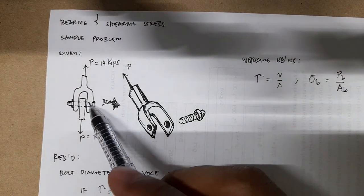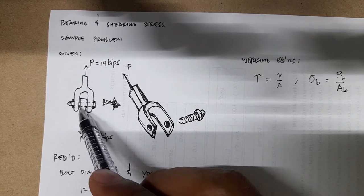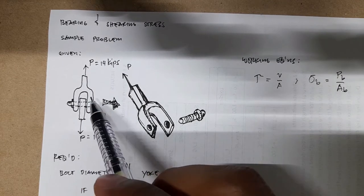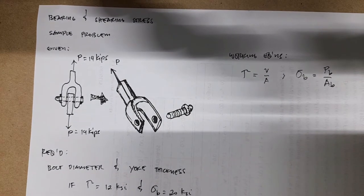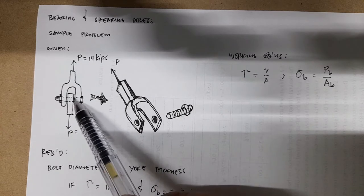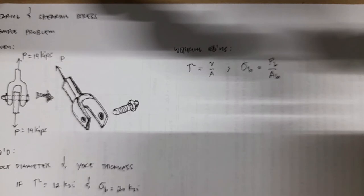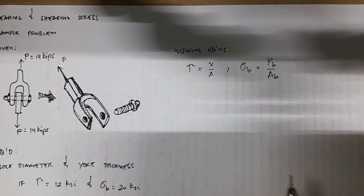If you observe this drawing, we actually have two sheared areas here under the action of a single force. This is what we call double shear — a single load applied but we have two sheared areas. The equation is still the same, only we have to include two areas as the shearing areas. We are concerned with finding the diameter.